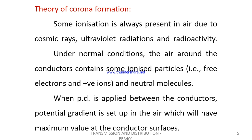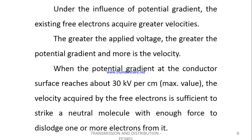Regarding the Corona formation theory, some ionization is always present in the air due to cosmic rays, ultraviolet radiations, radioactivity, and electromagnetic radiation. Under normal conditions, the air around the conductors will contain some ionized particles and neutral molecules. When a potential difference is applied between the conductors, a potential gradient is set up in the air which will have maximum value at the conductor surfaces. Existing free electrons acquire greater velocities, and the greater the voltage applied, the greater the potential gradient and more is the velocity.